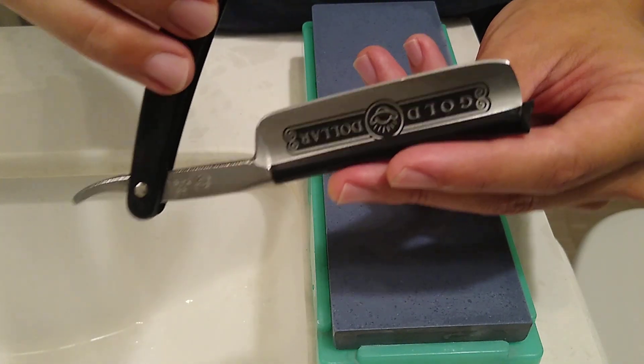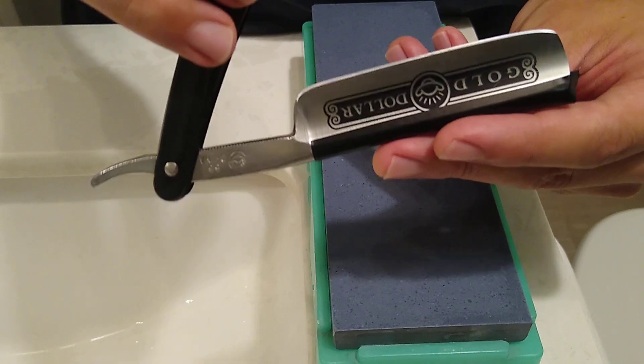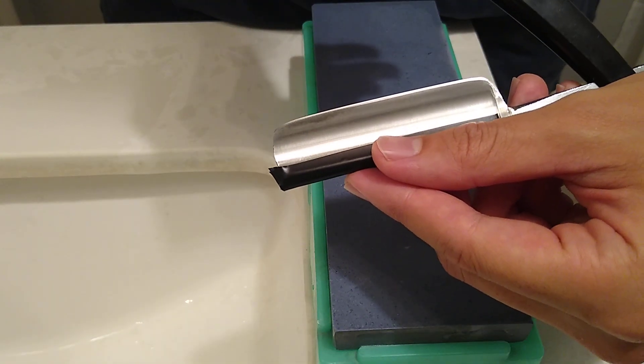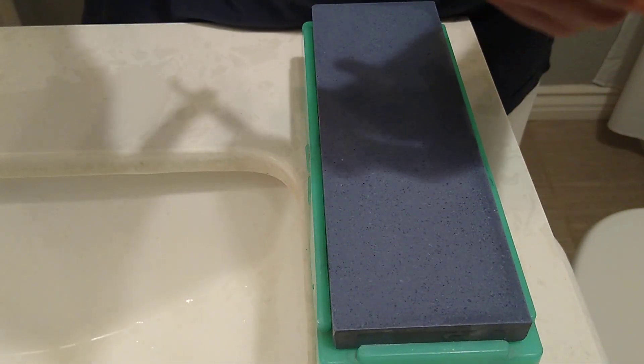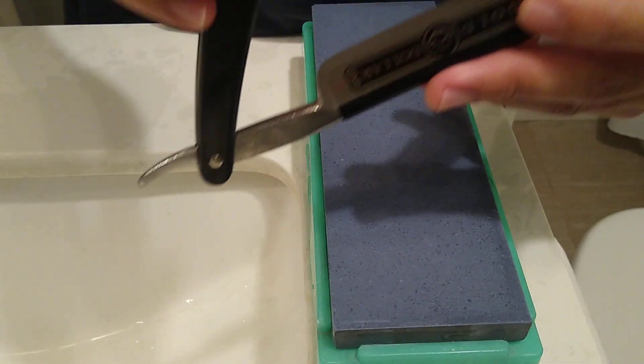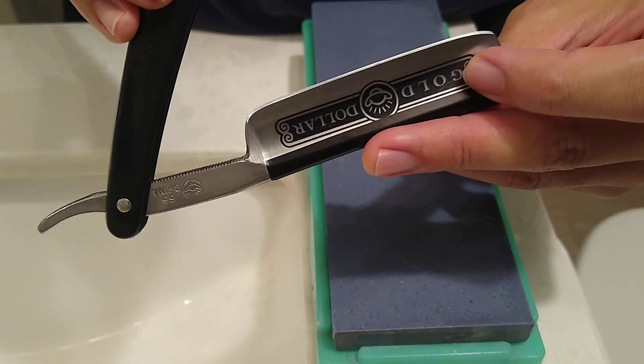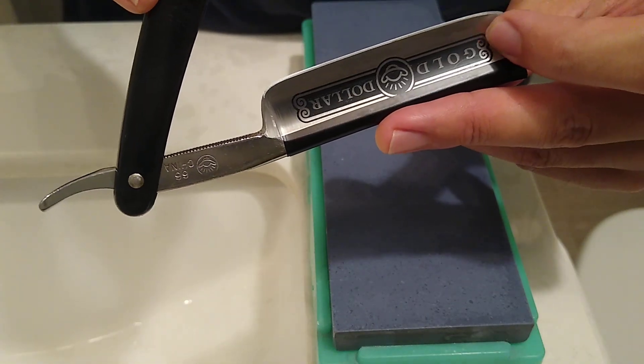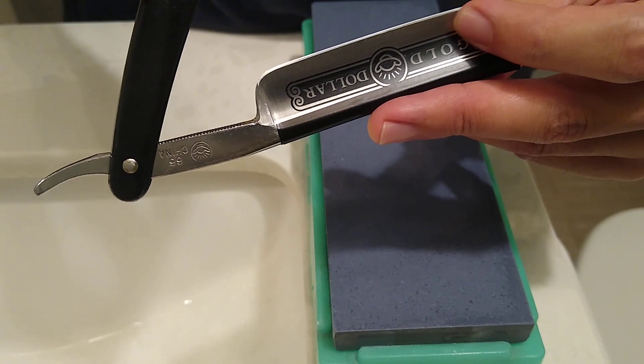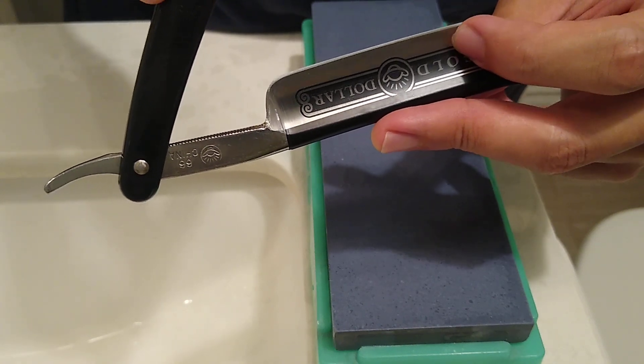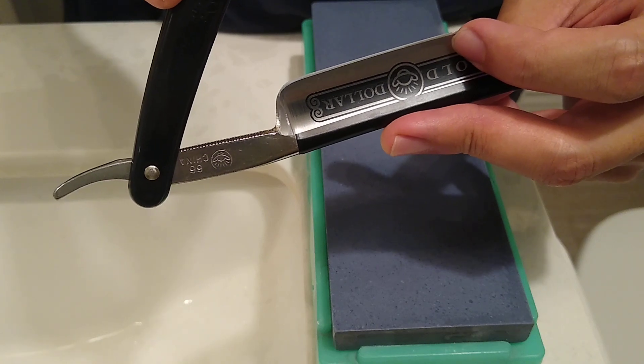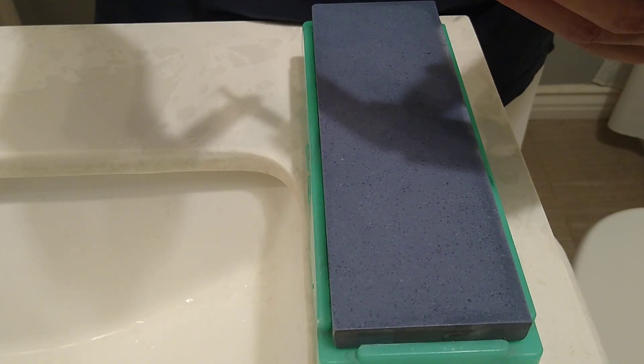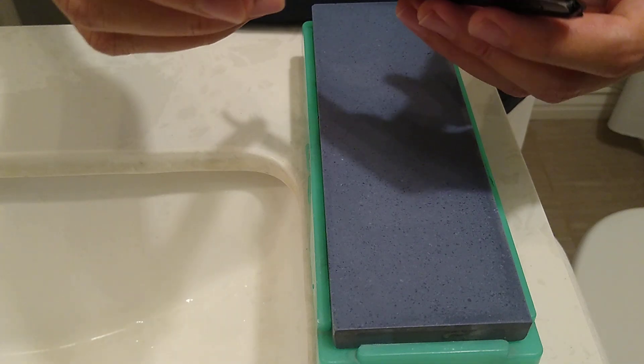Judging from the light shining from the bevel, it looks pretty even on both sides, but this side over here, the one with the Gold Dollar etching, the top half of the toe is very stubborn. There is this one part over here right here on the edge that is not being sharp. The rest of the edge is doing okay.